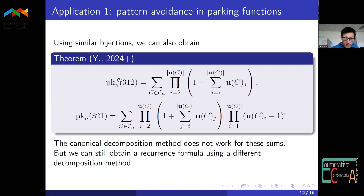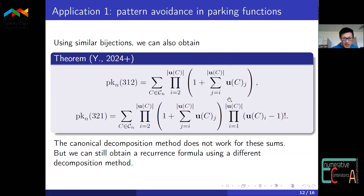Similarly, for the patterns 3-1-2 and 3-2-1, we can do the same thing, except that now the weight that comes out is slightly more complicated. Each term in the product can depend on not just one entry in U of C, but on a cumulative sum of the entries in U of C. This makes the canonical decomposition method not work directly, but we were still able to obtain a recurrence formula for these cases by using a slightly different decomposition method.